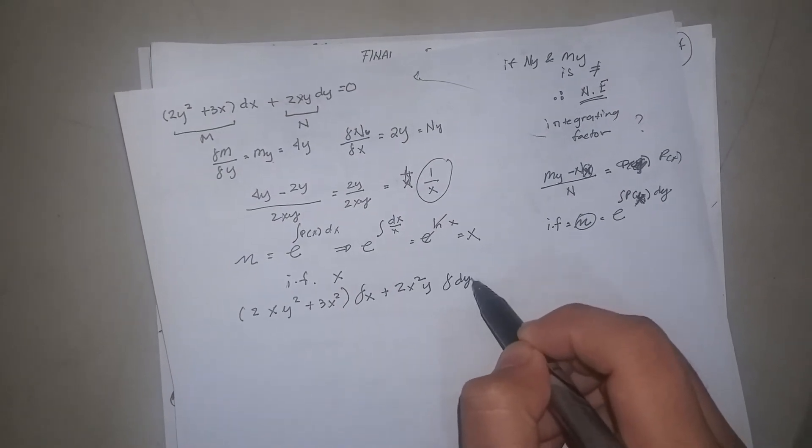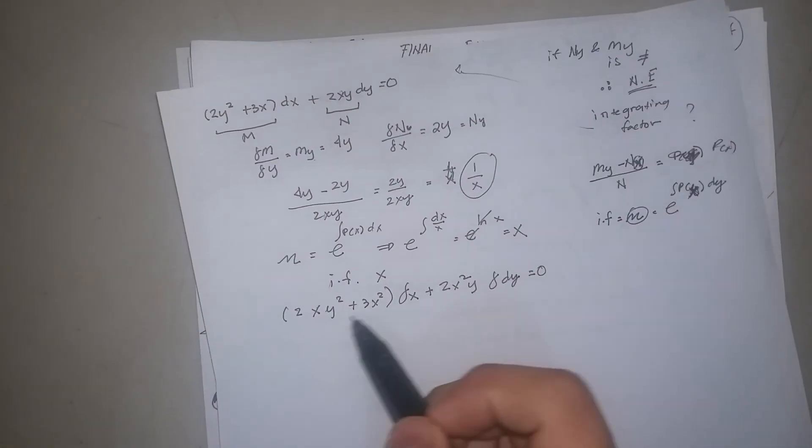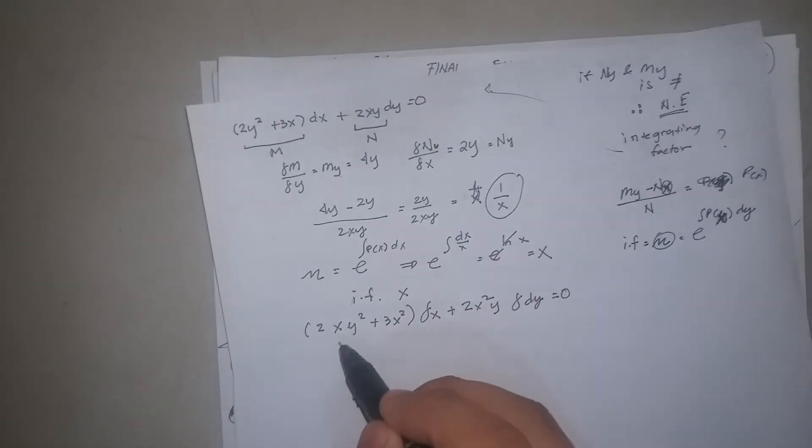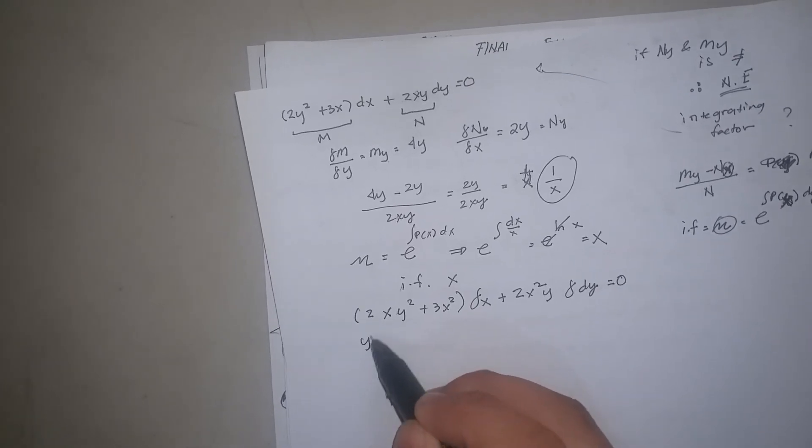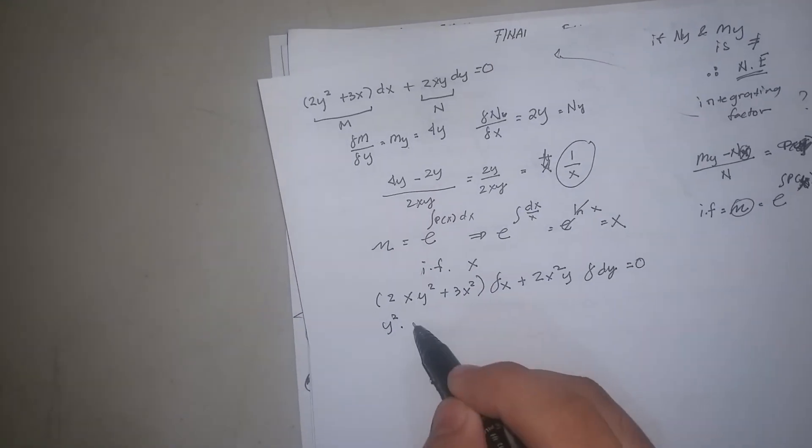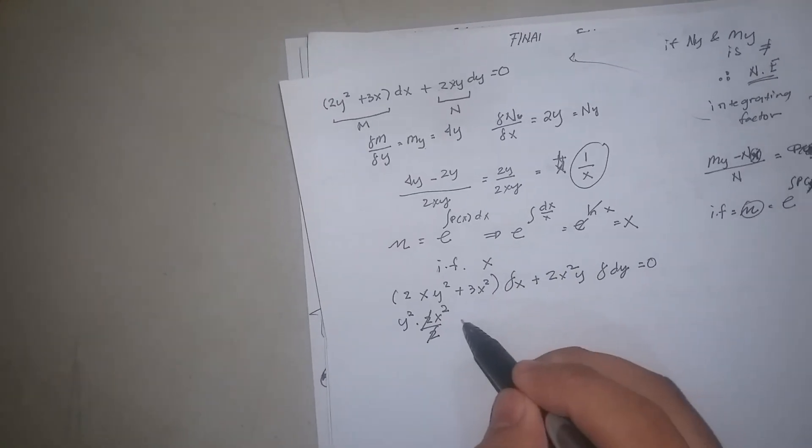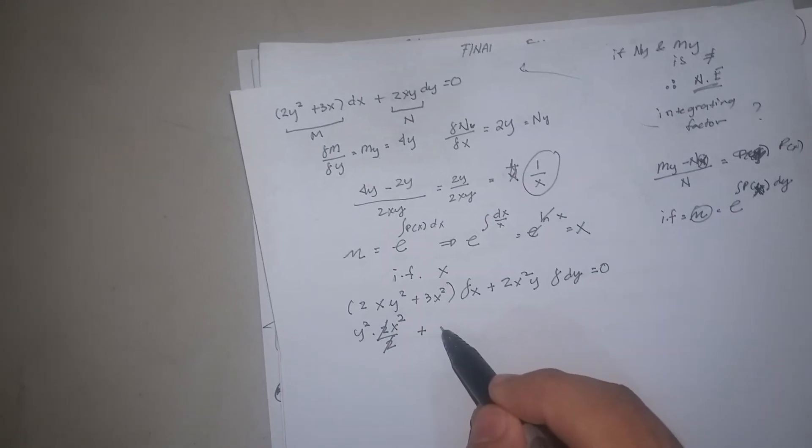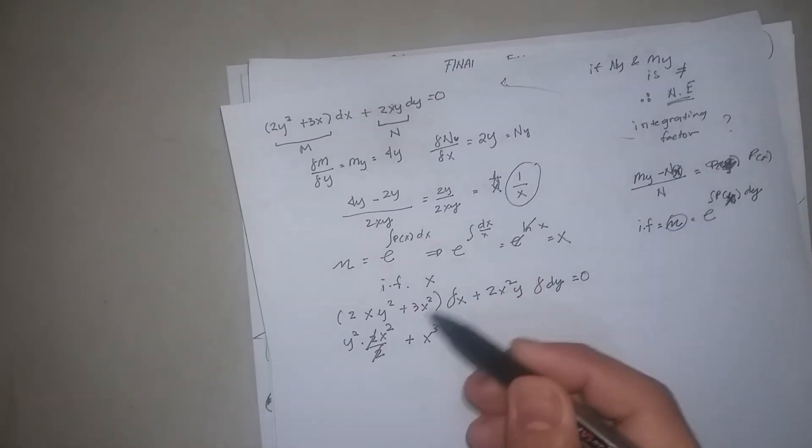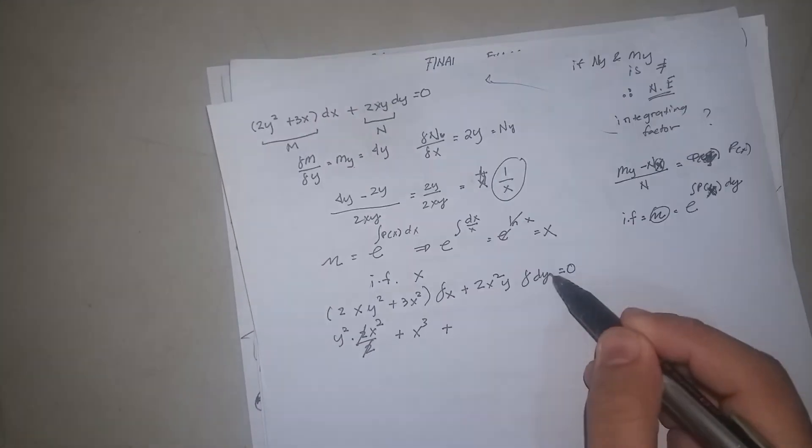Integrate this with respect to x. Therefore, y squared is constant, so 2 times y squared times 2x squared over 2, cancel, plus 3x cubed over 3, cancel the 3.